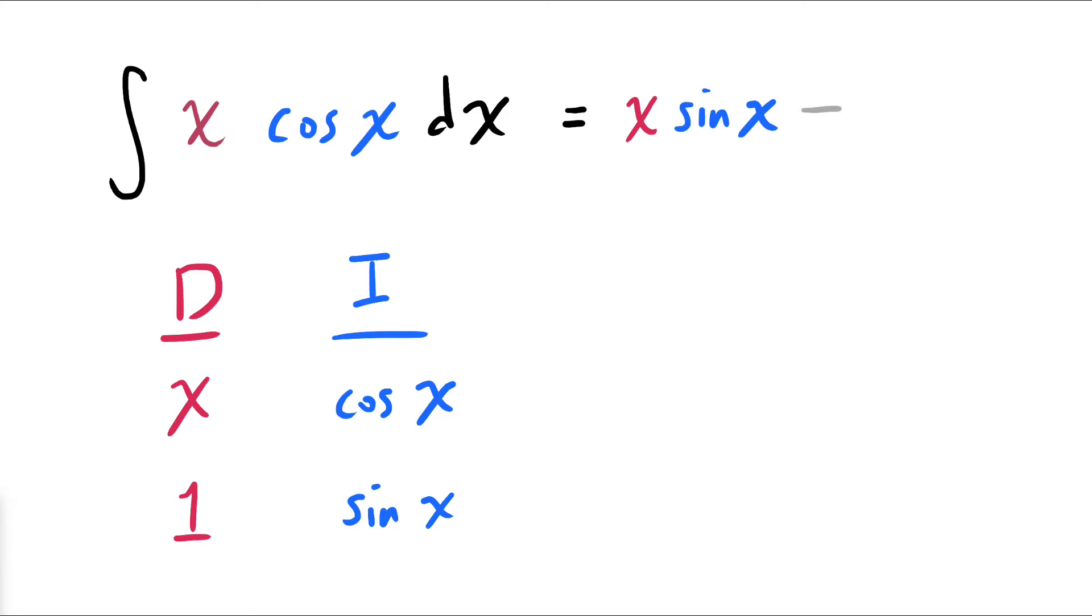which is x sine of x, and we subtract the integral of the product of the bottom entries of the table, which in this case is just sine of x. And now by integrating sine, we get exactly the answer we had before.